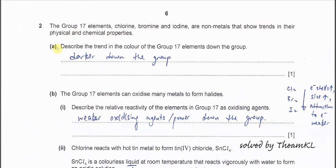Part A. Describe the trend in the color of Group 17 elements down the group. Of course it's darker down the group. We know that chlorine is a green gas, bromine is an orange liquid, and iodine is a black solid.